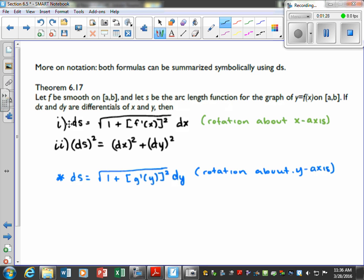But first of all, it's just saying if your ds is √(1 + [f'(x)]²) dx, you can see this looks very familiar. This is with rotation about the x-axis, and this is just rotation about the y-axis, then it's defined in that way, such that our differential of the arc length function is represented in that way.